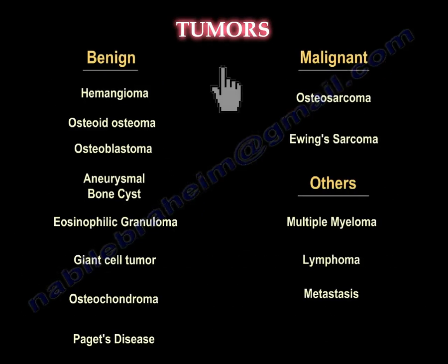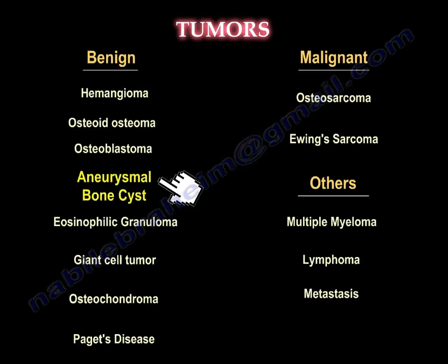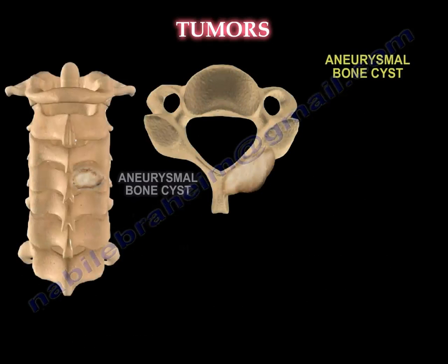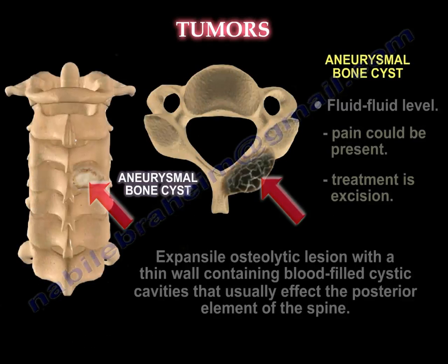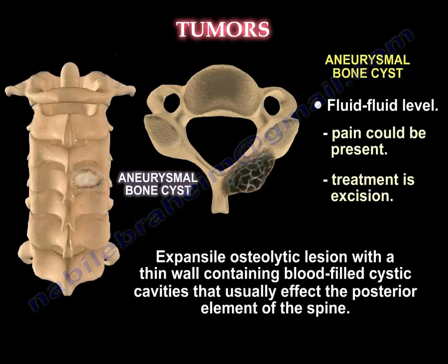Another one is aneurysmal bone cyst. You will find fluid-fluid level on CT scan or MRI. Pain can be present. Treatment is excision. It usually affects the posterior element of the spine.